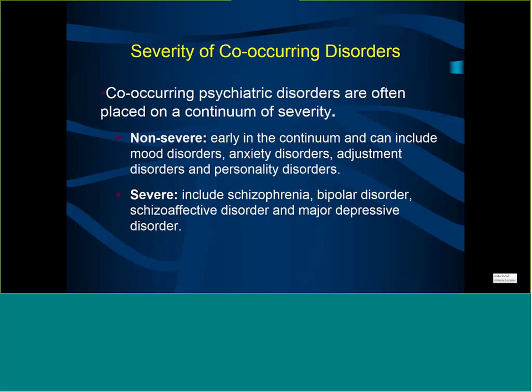It is important to consider the spectrum of severity. More severe co-occurring disorders — in terms of intensity and symptoms — are usually seen with psychotic disorder, bipolar disorder, or major depressive disorder. Non-severe presentations are more associated with mild anxiety disorders or adjustment disorders. However, this classification is somewhat theoretical. You want to evaluate each patient individually in terms of how much impairment and loss of functionality you are seeing as a result of the substance use or psychiatric disorder.